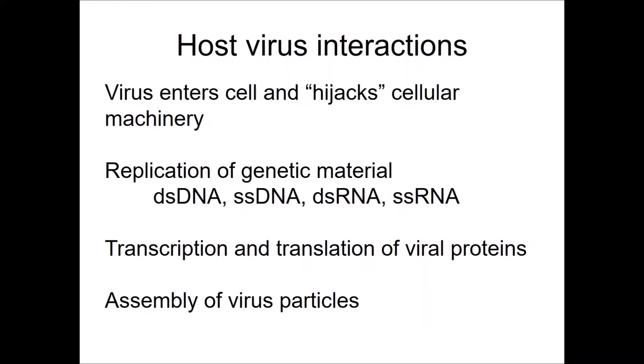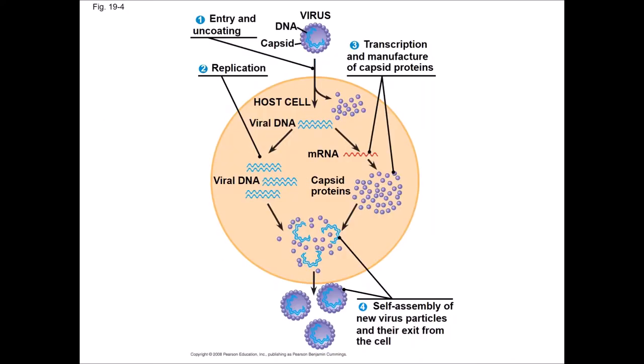Typically in a viral life cycle, the virus will enter the cell and hijack cellular machinery. The genetic material of the virus will then replicate — this could be double-stranded or single-stranded DNA, or double-stranded or single-stranded RNA. Then there will be transcription and translation of the viral proteins and assembly of the virus particles. In step one, a DNA virus enters a cell and loses its capsid coat. Viral DNA is replicated using host cell machinery — DNA polymerase, primase, etc. This encodes the viral genome as well as mRNAs, which are transcribed and translated into capsid proteins and any other proteins packaged in the viral particle. The pieces of the virus, DNA and proteins, self-assemble and exit the cell.